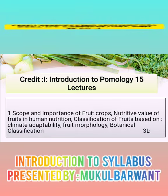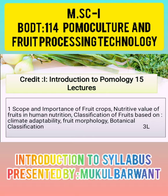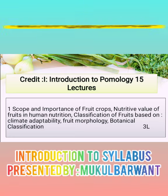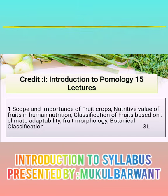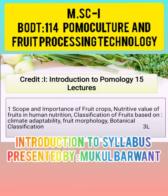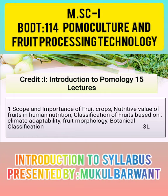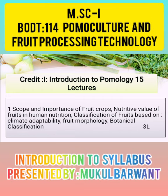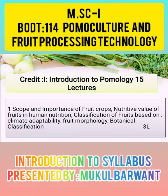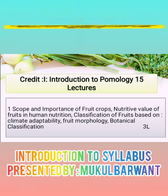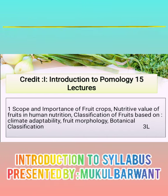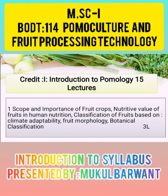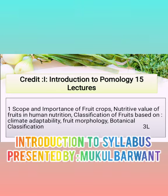Let's see the first chapter of the first credit: the scope and importance of fruit crops, nutritive value of fruit in human nutrition, classification of fruit on the basis of climate adaptability, and fruit morphology and botanical classification of fruit. For scope and importance, we study how important and what scope that fruit crop has — for example, fruit cultivated for economic purpose, food purpose, and nutrition purpose.